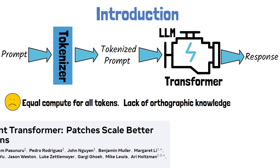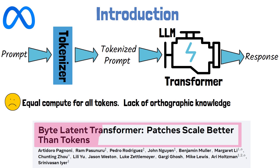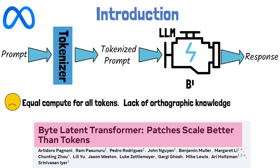In this video, we dive into a recent paper by Meta titled Byte Latent Transformer: Patches Scale Better Than Tokens. The paper introduces the Byte Latent Transformer, or BLT in short, a tokenizer-free architecture that learns from raw byte data. Processing the sequence byte by byte results in very large sequences, which in turn creates scaling issues for byte-level models. To mitigate this, the Byte Latent Transformer dynamically groups bytes into patches and does most of its processing on these patches.